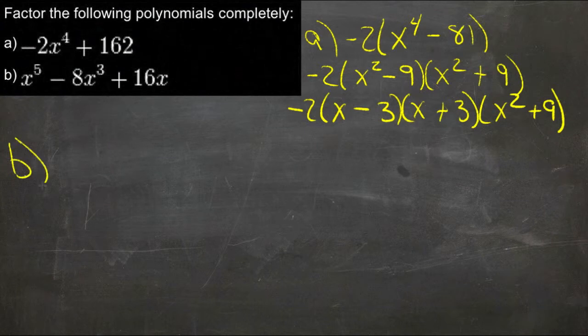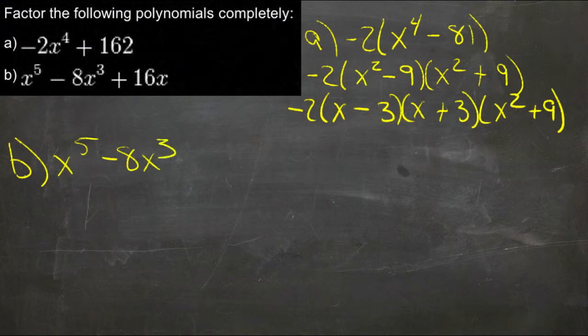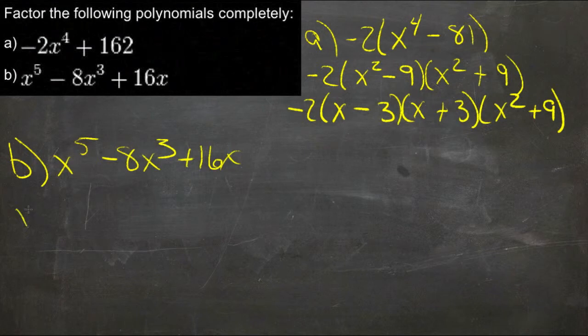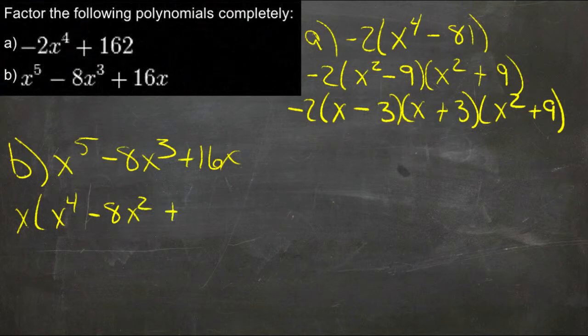And now for b, we have x to the 5th minus 8x cubed plus 16x. So we'll pull out an x, and we'll get x times x to the 4th minus 8x squared plus 16.